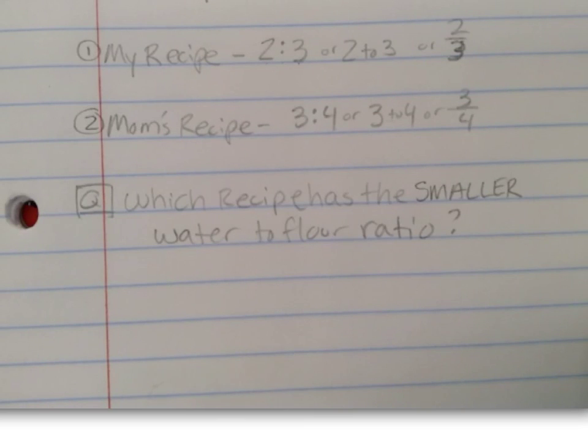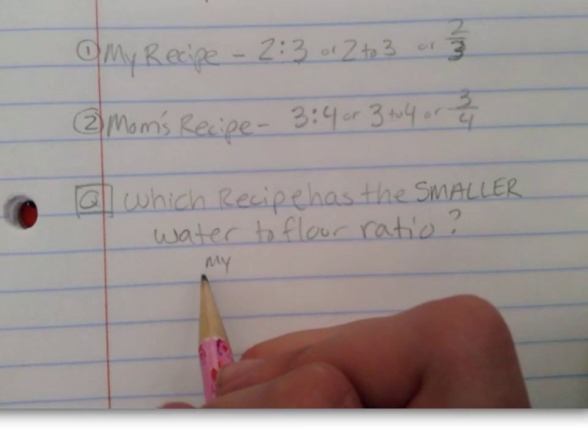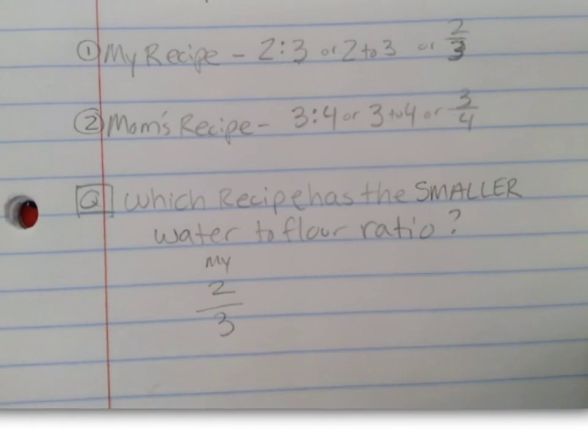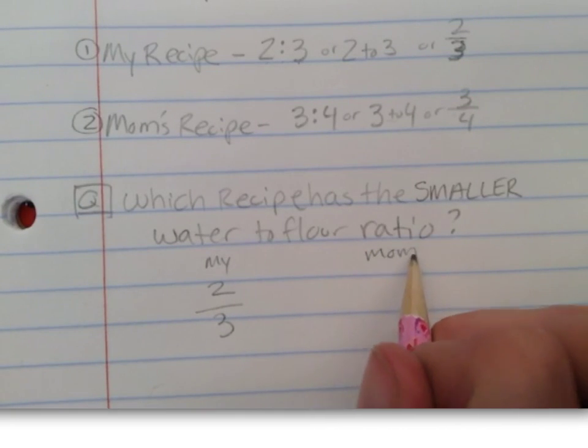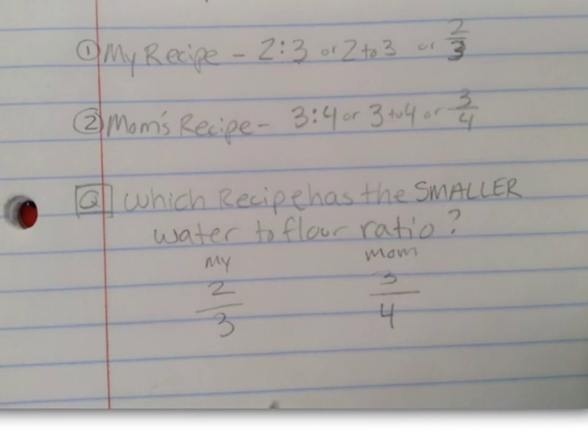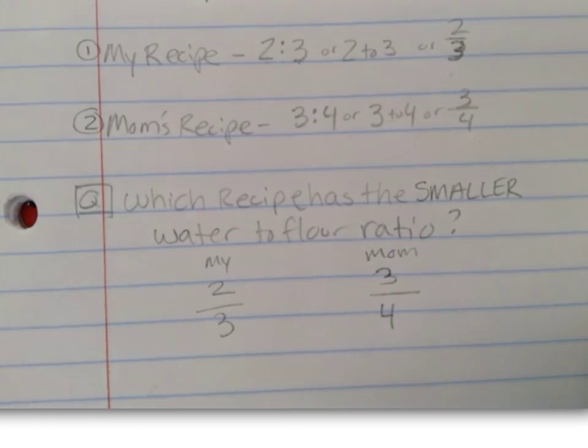And the first place I want to start is by rewriting my ratio of two cups of water for every three cups of flour to my mom's three cups of water for every four cups of flour. I chose to use the fraction equivalent because I know that I'm able to easily find equivalent fractions or equivalent ratios.